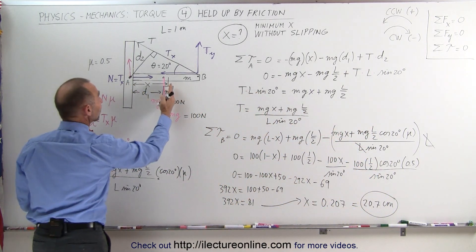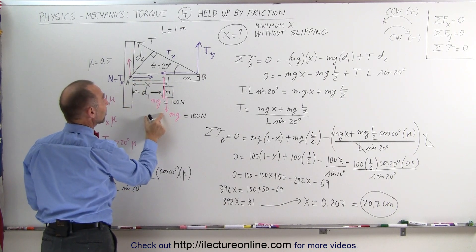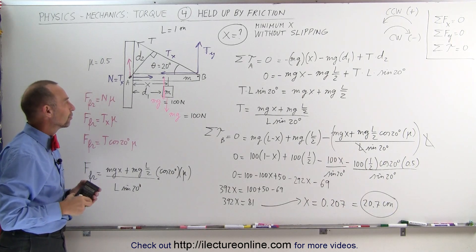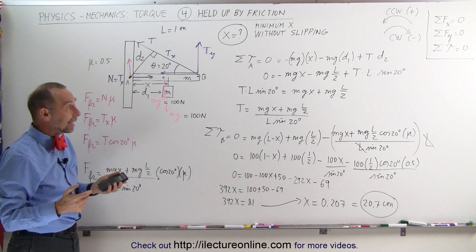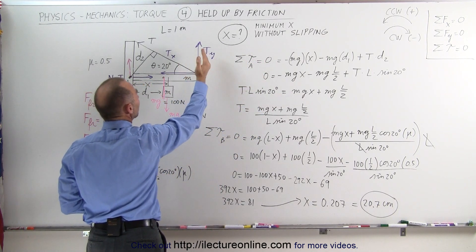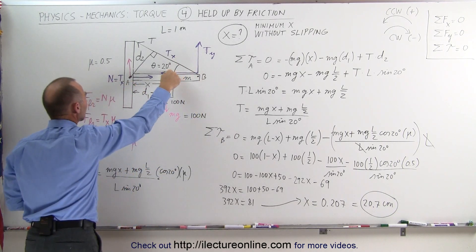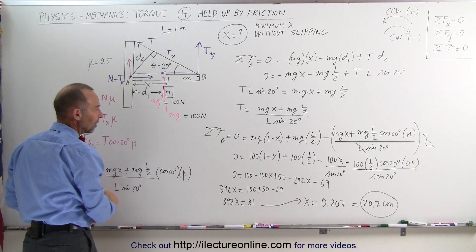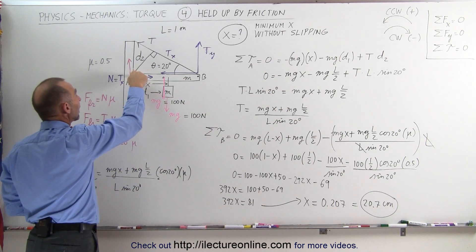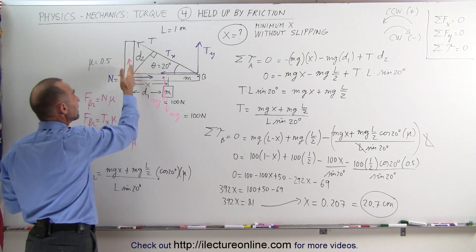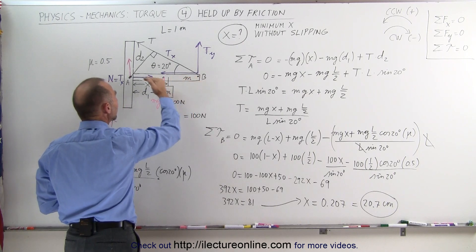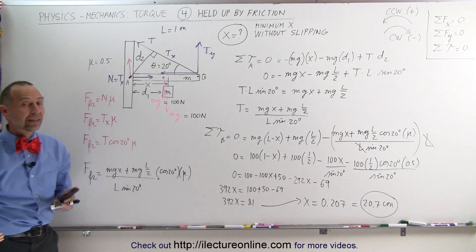The closest you can bring the mass toward the post is 20.7 centimeters. Bring it any closer and the beam will slip; keep it 20.7 cm away or farther and the friction will hold the beam against the post. In summary: we found the torque about point A to get the tension, used T_x to get the friction force, then summed torques about point B to solve for the minimum distance x.